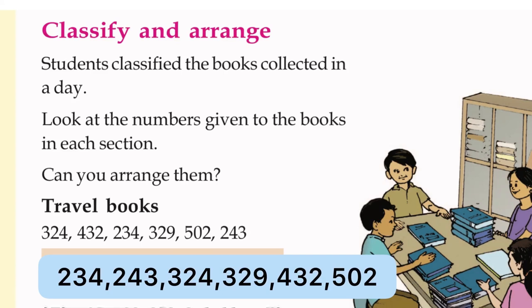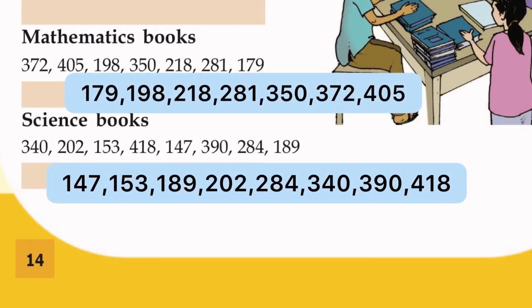Next, mathematics books: 372, 405, 198, 350, 218, 281, 179. We can arrange from the smallest to largest.